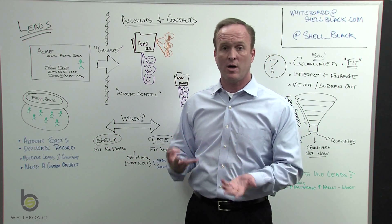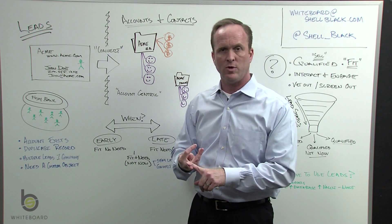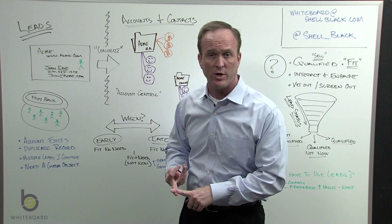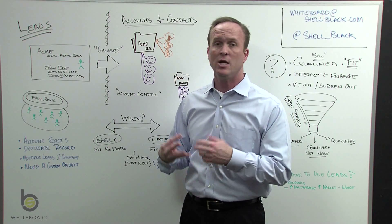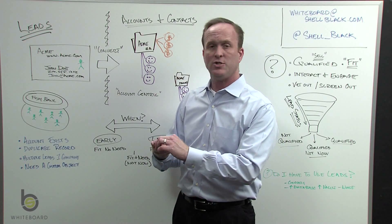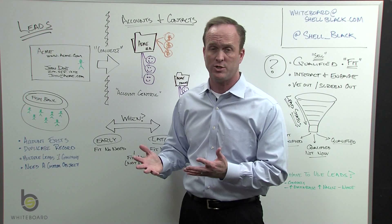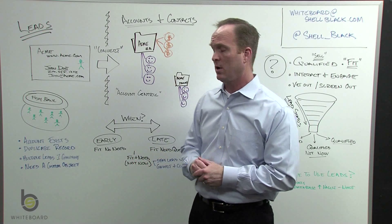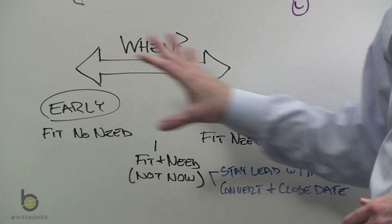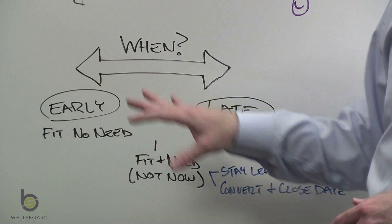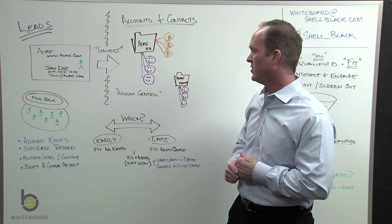You might have multiple criteria — they're the decision maker, they consume your products and services, they have a competitor's product, they have budget, they have need. You might say if two out of those four things are in place, we'll convert them regardless of which two those are. You determine that. This is just an analogy to help illustrate the spectrum and help you focus on when it's time to convert that lead.